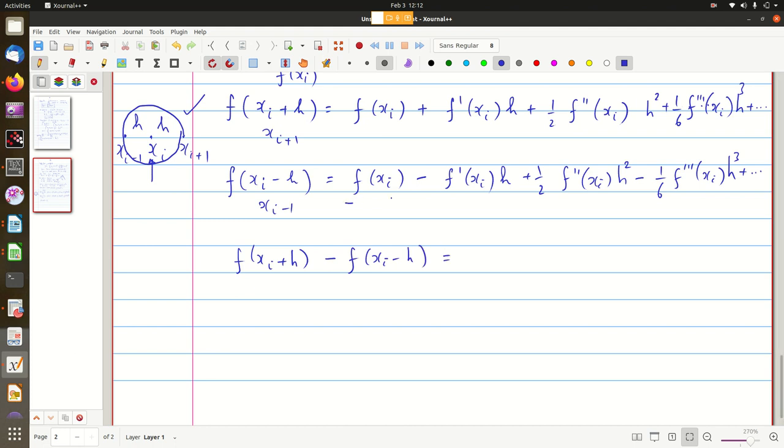Equal to... so this is minus, this will become plus, this will be minus, this will become plus, okay? So you will get 2 times f dash of xi into h. So this will get cancelled, it will go to 0, and these two will get cancelled, it will go to 0, and you will have the next one to be order of h cube, okay?